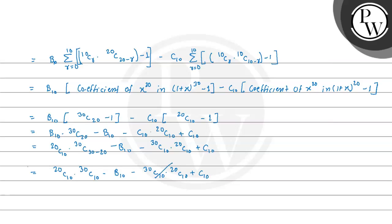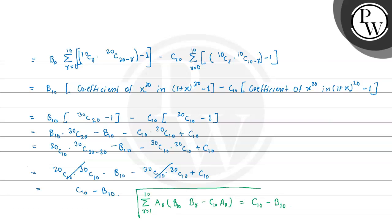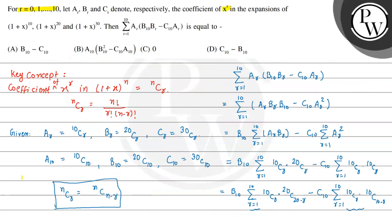Here these two terms cancel each other since one is positive and one is negative. Therefore we can write the answer as C10 minus B10. So finally, summation of ar multiplied by (b10·br minus c10·ar), where r varies from 1 to 10, is equal to C10 minus B10. This is our final answer, and option D is the correct choice.